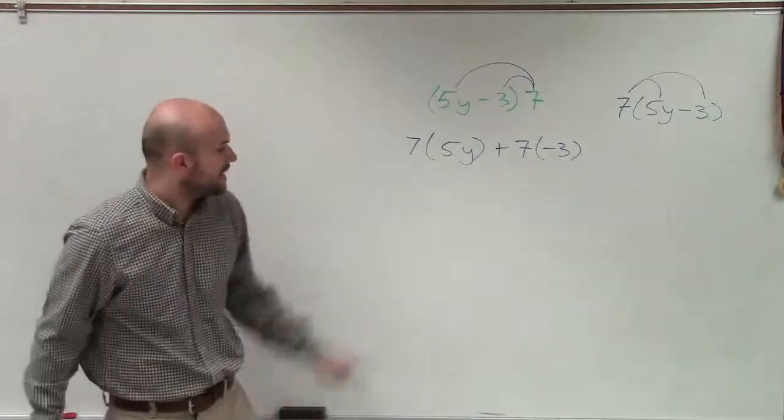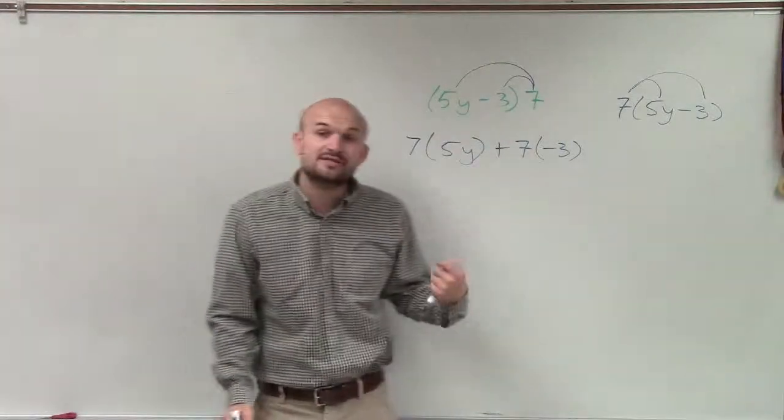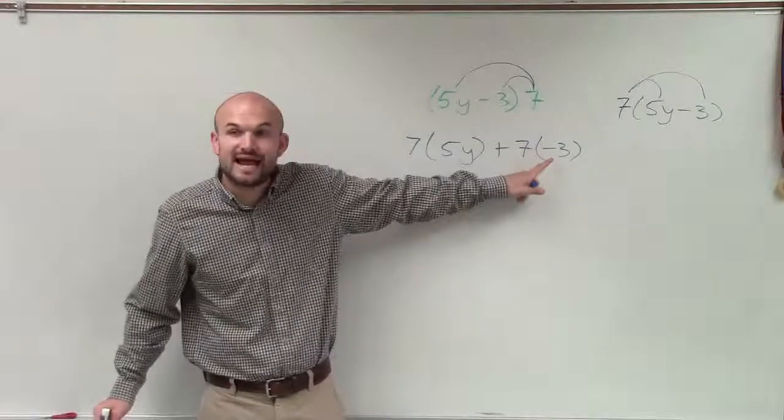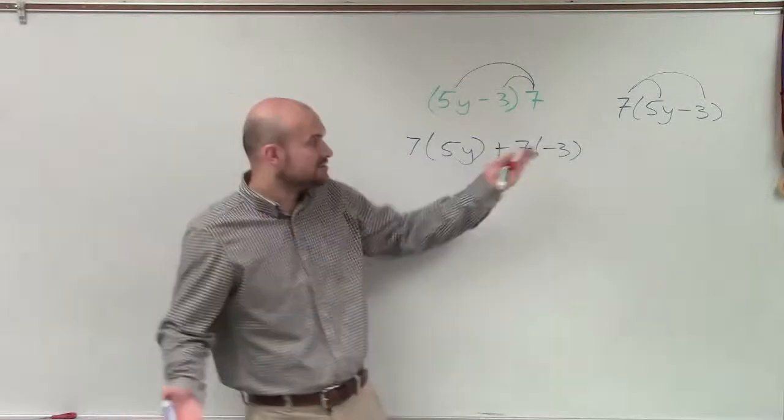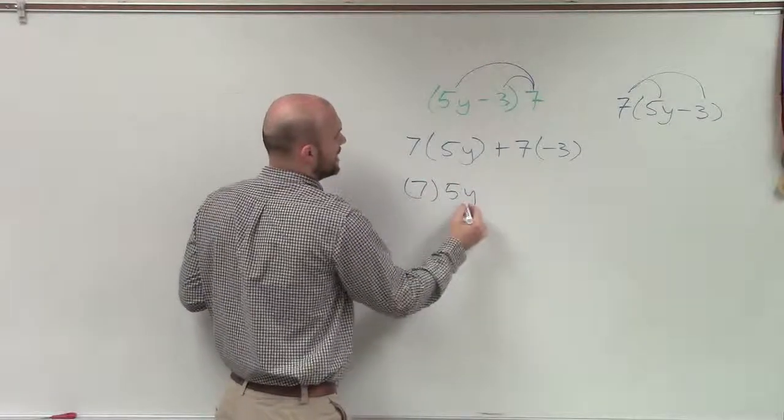All right. So you multiply 7 times both terms inside of there. And notice that my term is negative. That's a negative 3. You could also do it a different way. You could put the 7 out there and just do 7 times 5y.